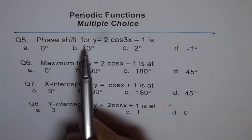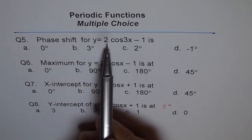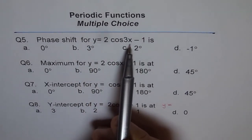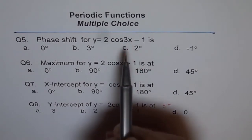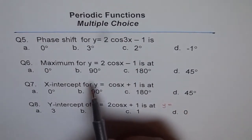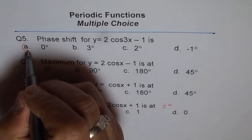Here is how I would like to answer them. Question 5. Phase shift for y equals 2 cos 3x minus 1. So there is no term after, like it is 0. 3x. So the phase shift here is 0.